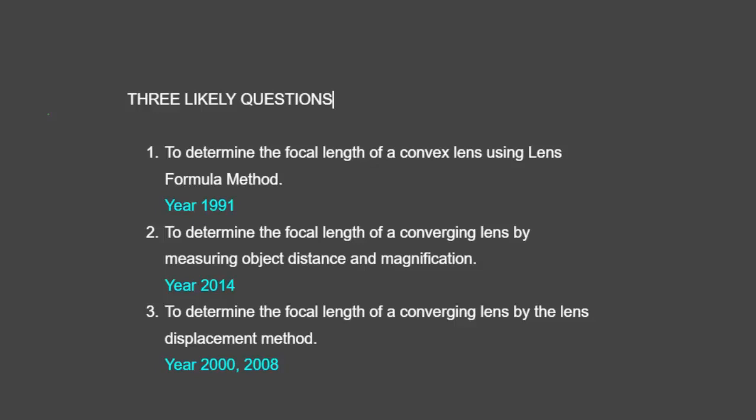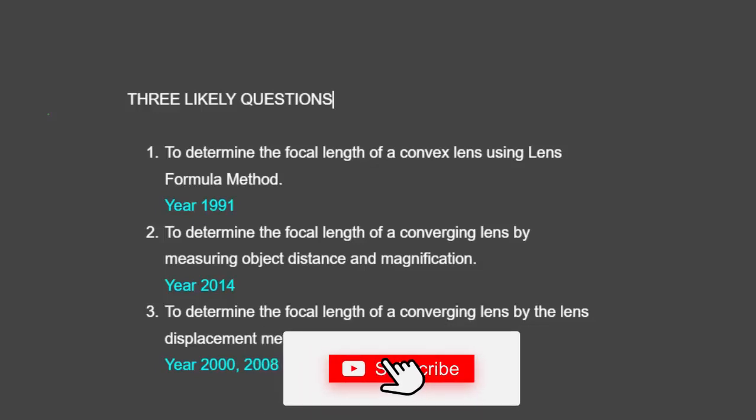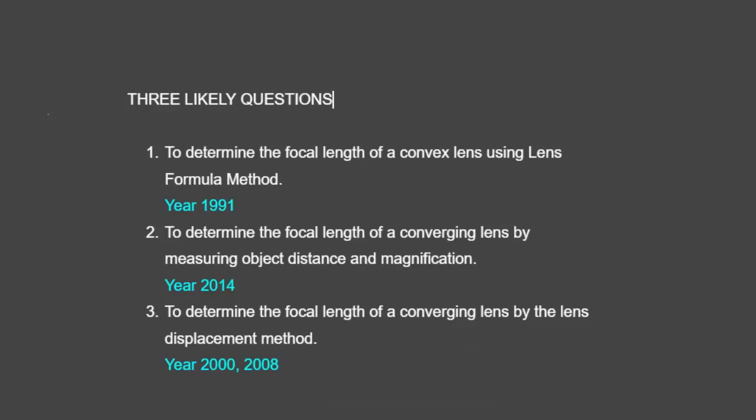So we're going to explore these three options of potential likely questions and will have them in parts, so do watch out for other parts of this video. Today's video will be focused on the first method: to determine the focal length of a lens using the lens formula method, using the procedure set by WAEC in 1991.